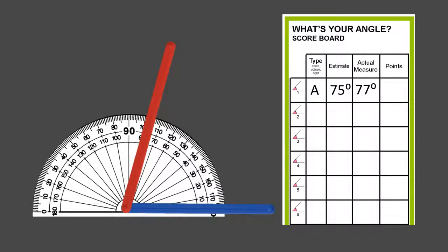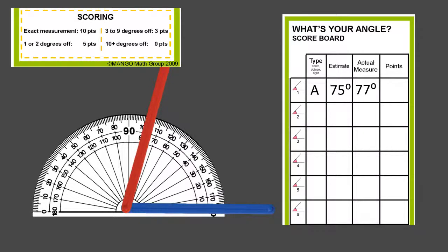They get points shown at the bottom of the scoreboard. If they get exact measurement they get 10 points. If they're 1 to 2 degrees off they get 5 points. If they're 3 to 9 degrees off they get 3 points. And if they're 10 or more degrees off they get 0 points. In this case, this player was 2 degrees off, so they got 5 points.